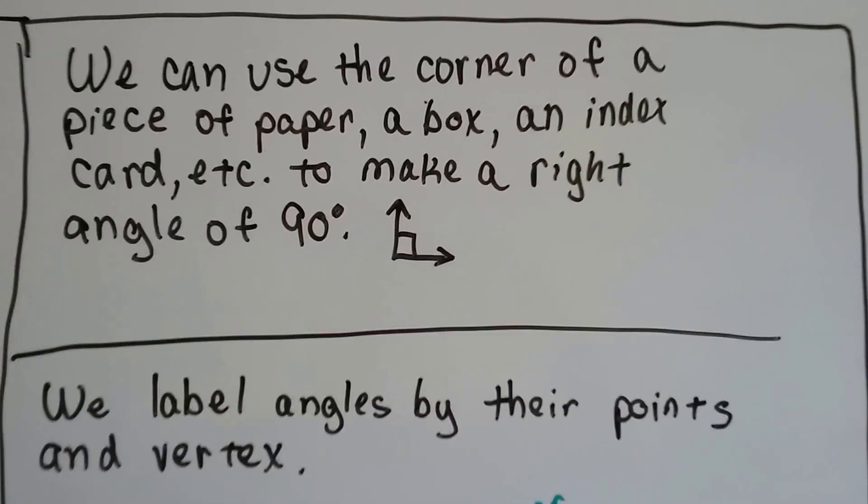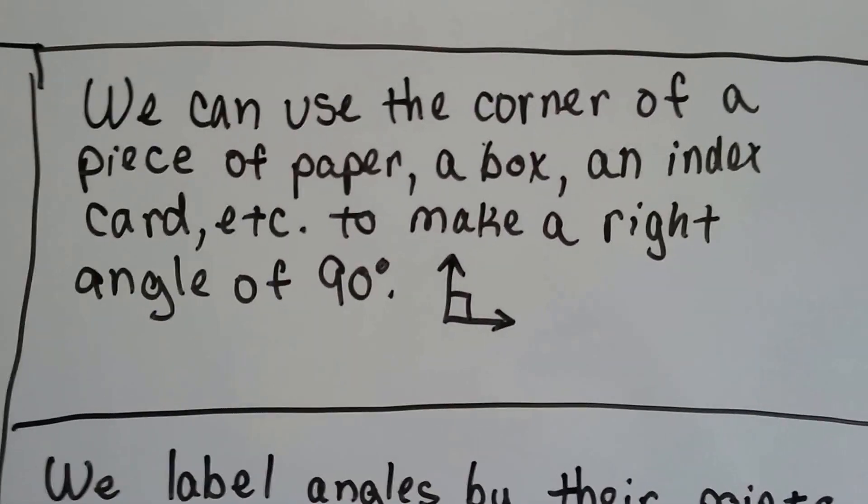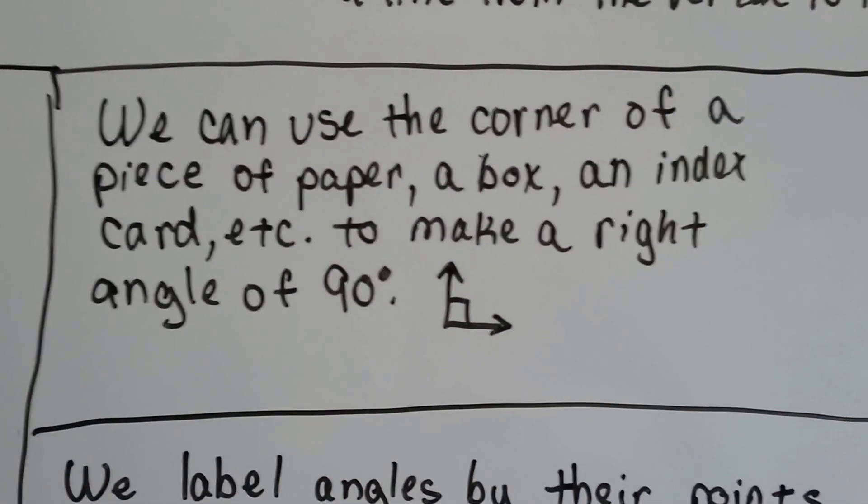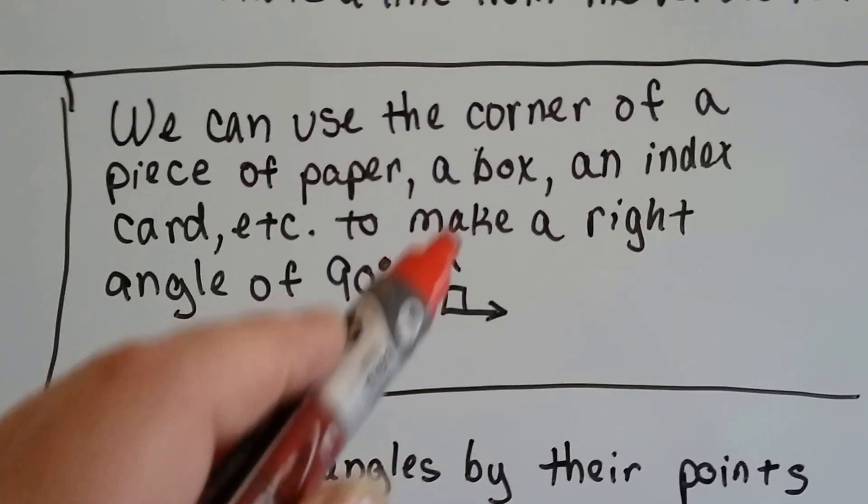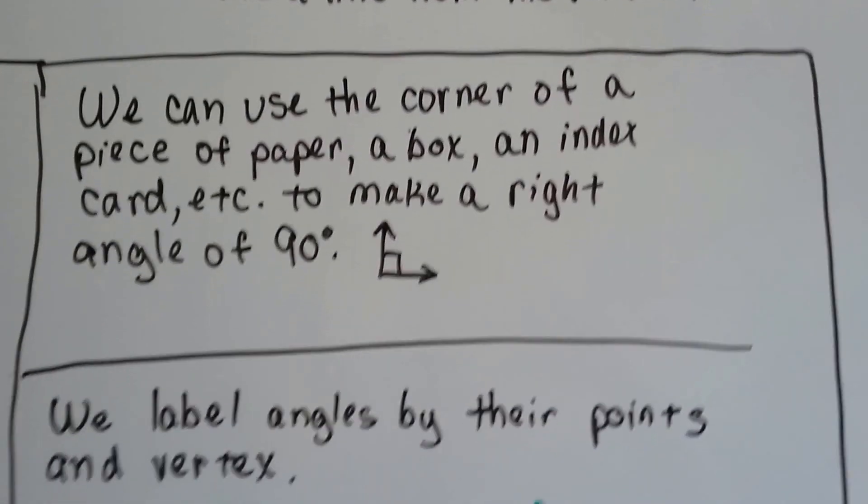Now, we can use the corner of a piece of paper or a box or an index card or even a business card to make a right angle of 90 degrees because they're cut that way. See? Even the corner of my dry erase board is a 90 degree angle. The corner of the room is a 90 degree angle.